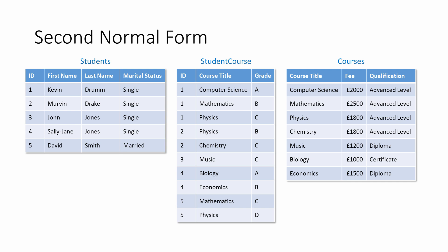The Courses table only contains data about courses. Each course only occurs once in the Courses table, and each course has a unique course title. The course title is the primary key in this table, and it's only about a course. Every non-key attribute in the Courses table is functionally dependent on the primary key, and only the primary key. There are no partial dependencies.